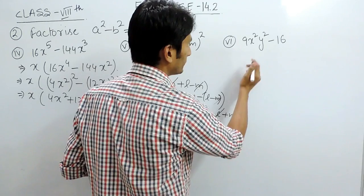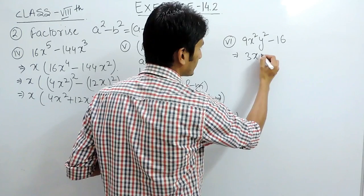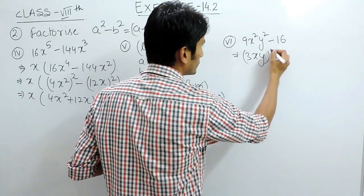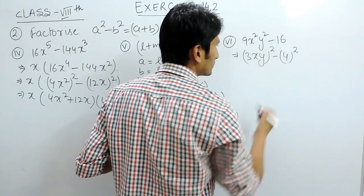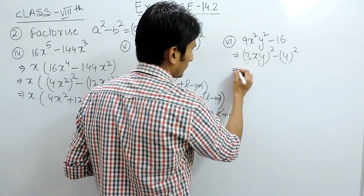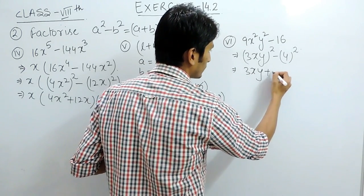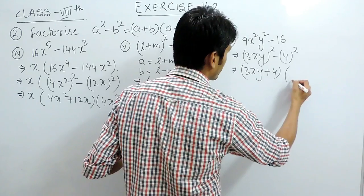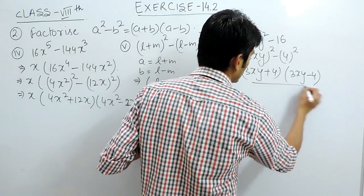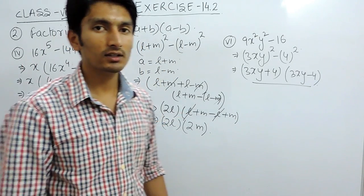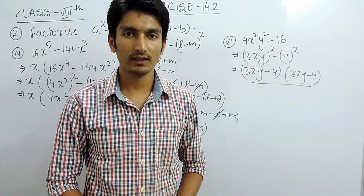Now let's solve the last one. This 9x²y² can be written as (3xy)², and this is 4². This is again a² - b², and we know that this equals (a+b)(a-b). So these are the factors for the third part. This is how we can solve these parts. Thank you.